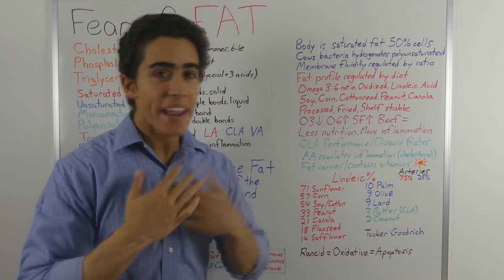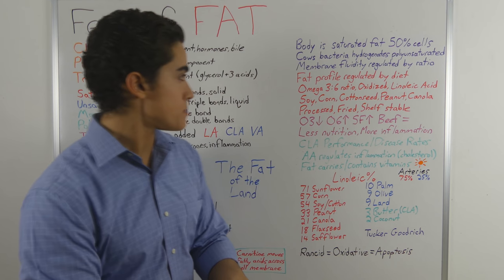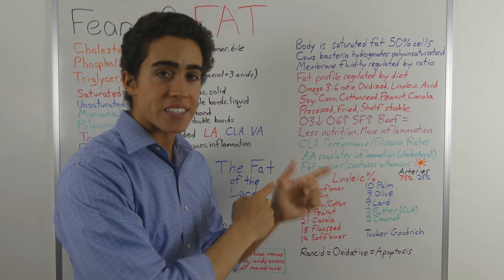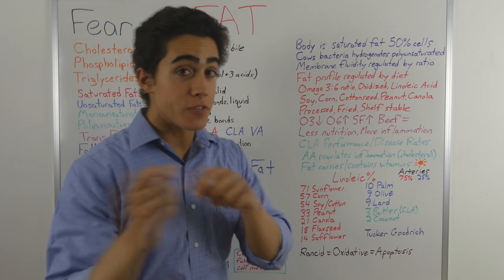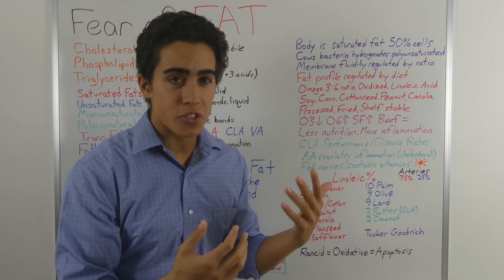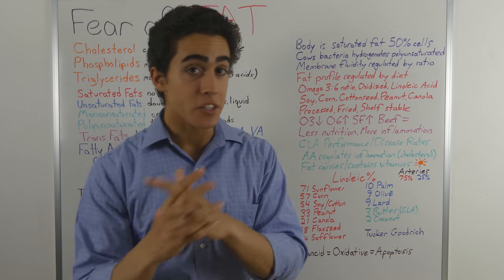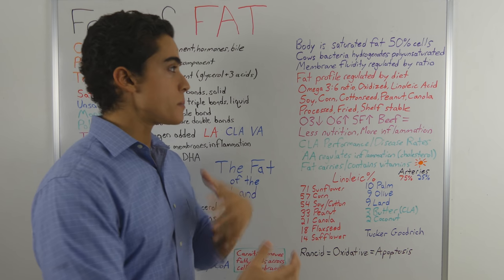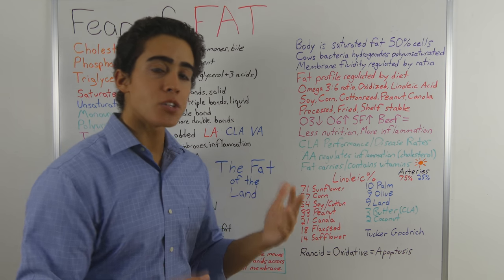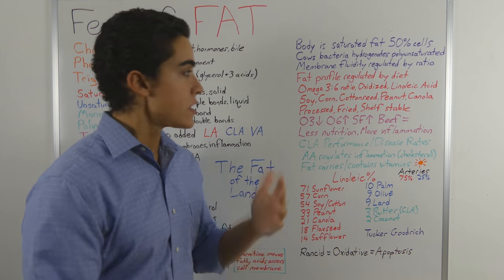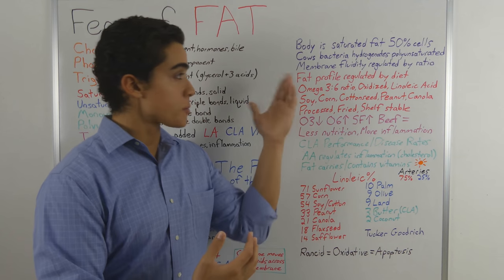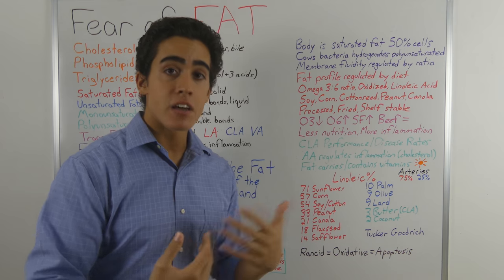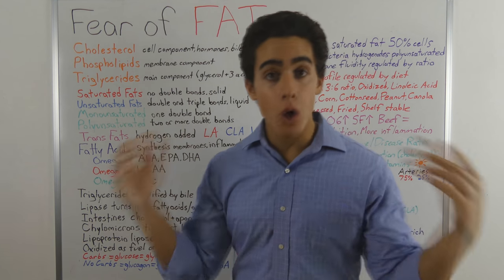Why are we so afraid of fat when we are made of fat? Our body is literally half saturated fat. Cows have bacteria in their stomach that hydrogenates polyunsaturated fats into saturated fats — when a cow eats grass, it's the equivalent of a human eating that cow. As our cells are made of fat, membrane fluidity is regulated by the ratio of fats consumed. This is why First Nation Alaskans, who consumed a lot of fish, had blood that took twice as long to clot — the omega fatty acids in the fish literally changed the profile of their blood. The fat profile of our body is regulated by diet; you are what you eat.